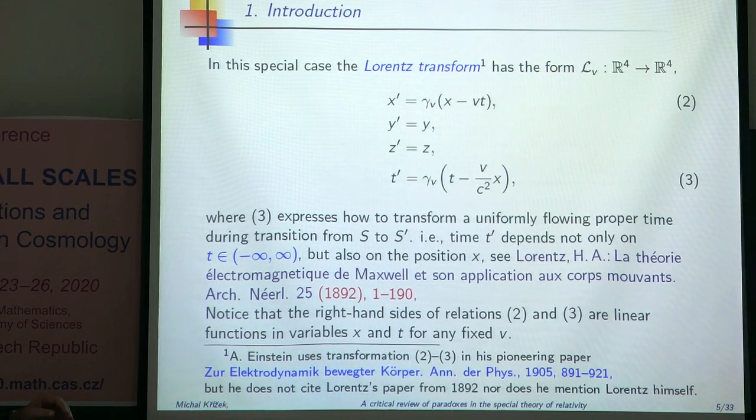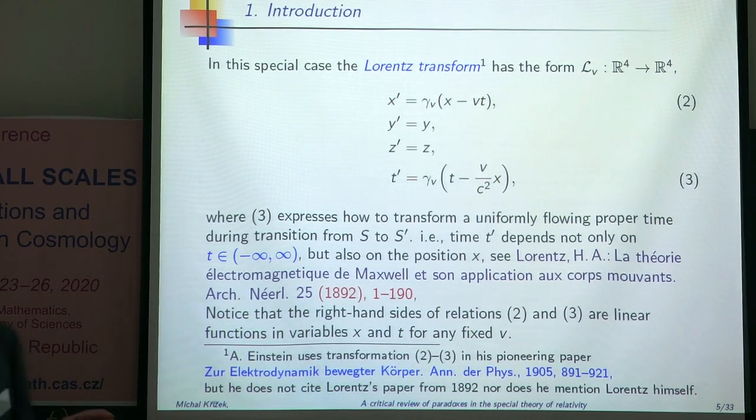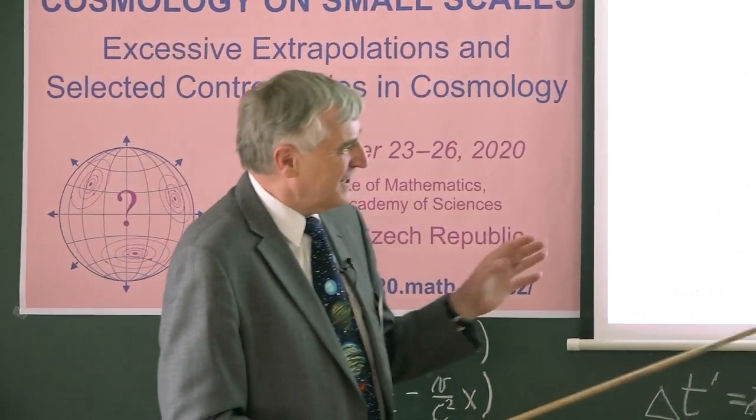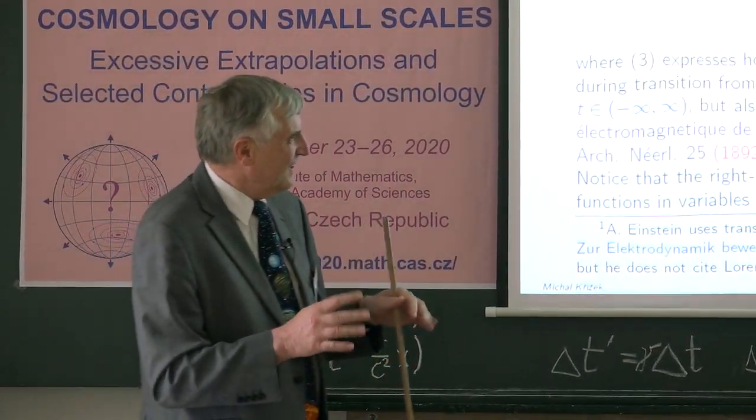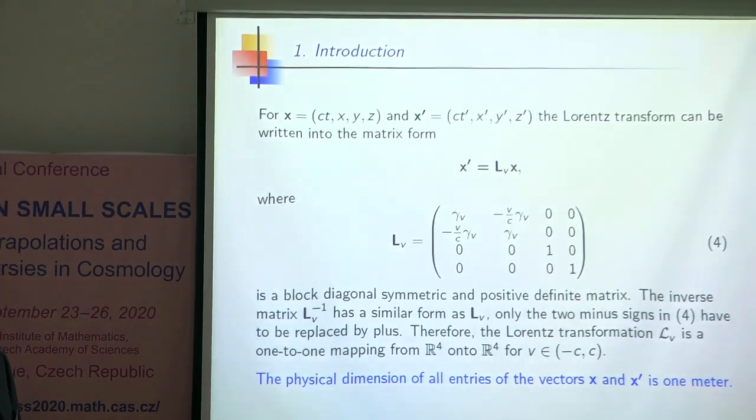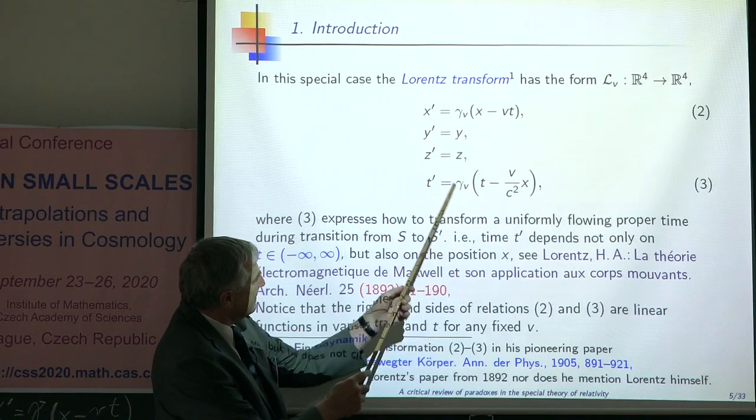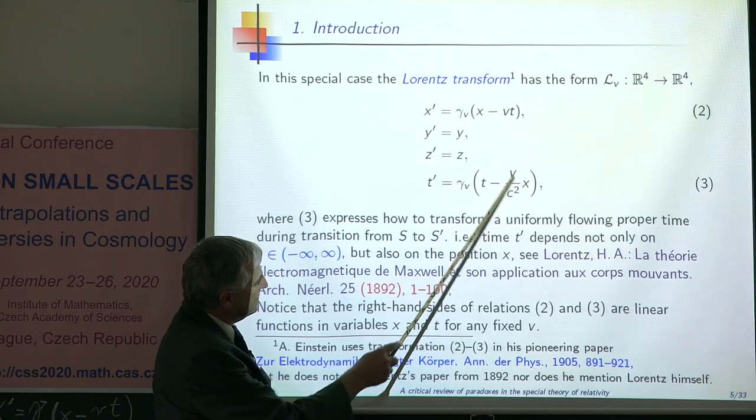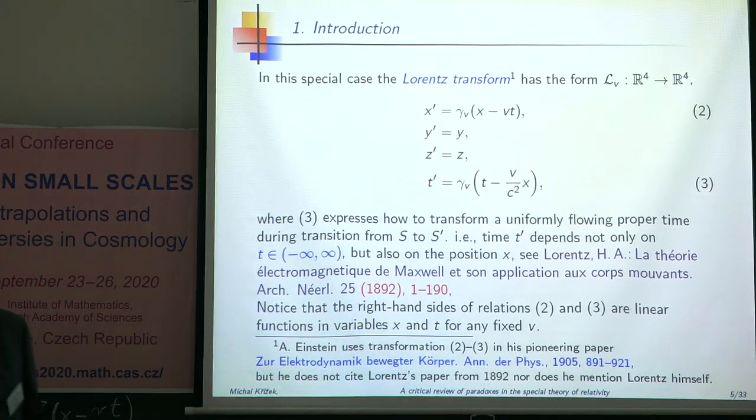Moreover, Lorentz was very famous at that time because he got the Nobel Prize in 1902, just after Röntgen. I think Einstein knew about it. But at that time, Einstein was 26 years old and he didn't know the rules when he published this famous paper. Here you can see this Lorentz factor is constant, V is also constant, c squared is constant. So this is linear mapping. This is also linear mapping. If it is linear, then you can write it in a matrix form.